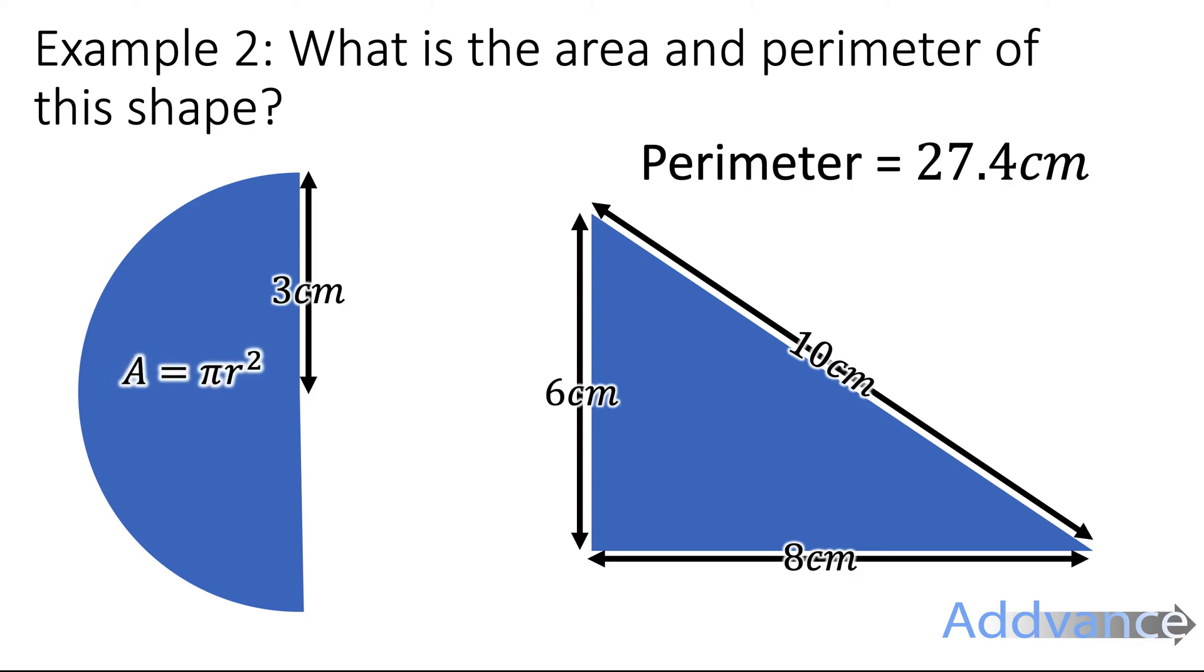The area of a circle is pi r squared, which is pi times 3 squared, which is 28.2743, but we half it and we get this. That's the area of that semicircle.